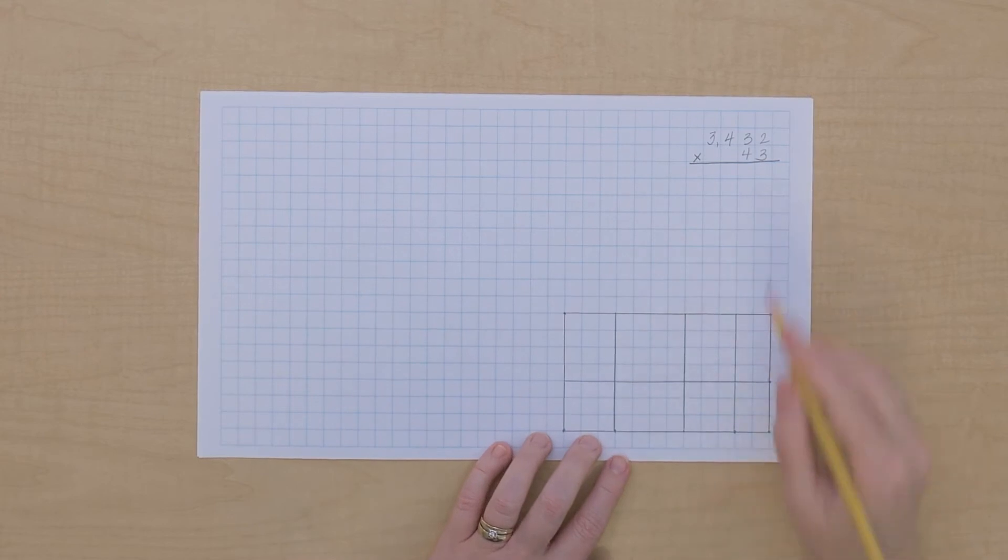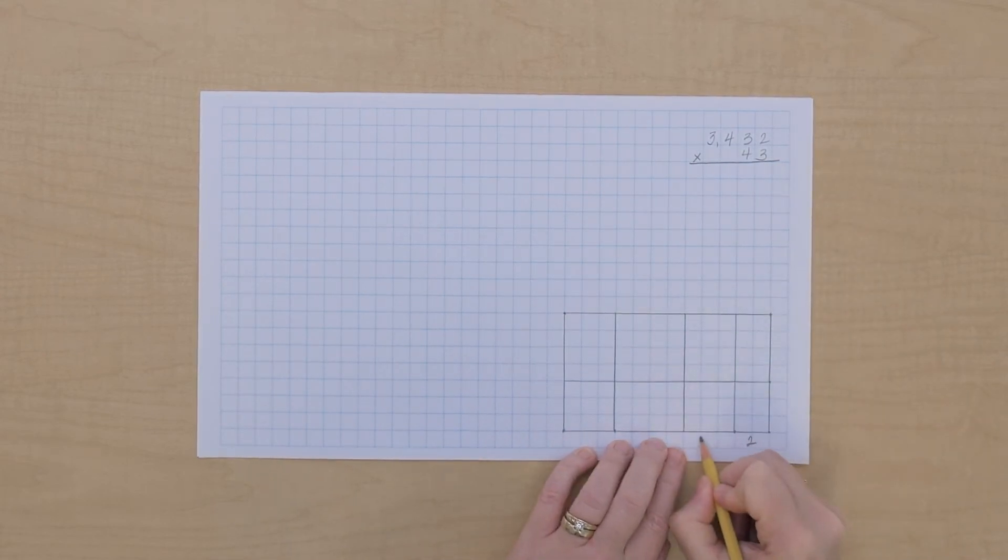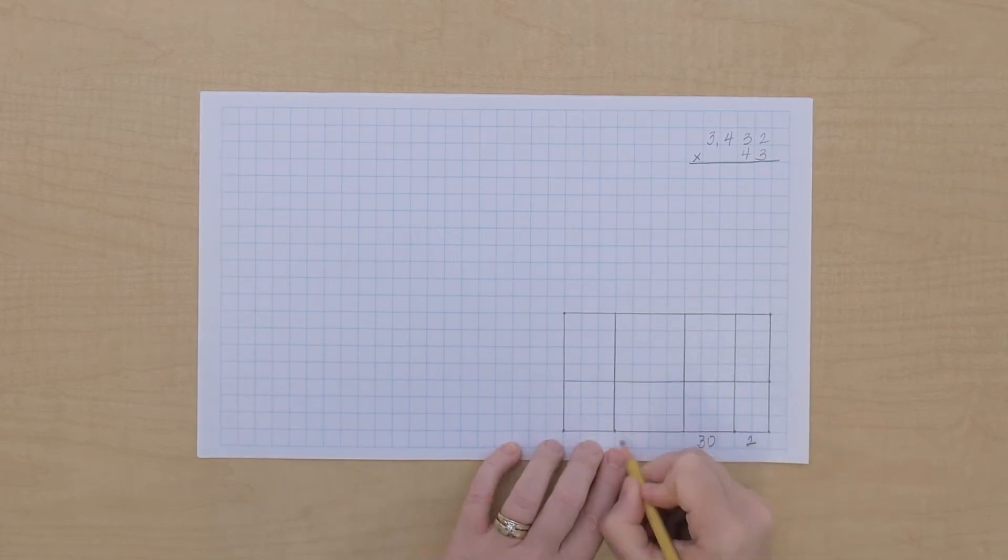Okay, so let's just make sure I've got two units, I've got 30 for three tens, four hundred, and three thousand times forty-three, all right.